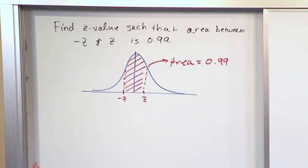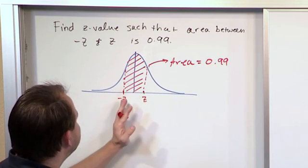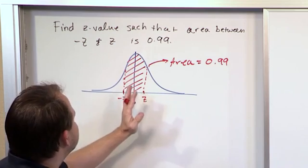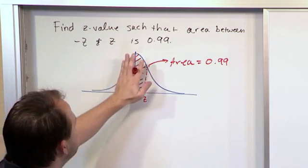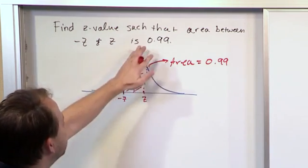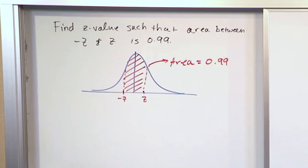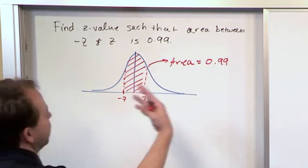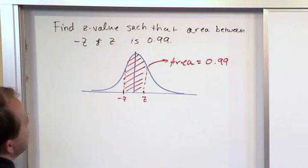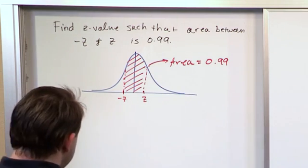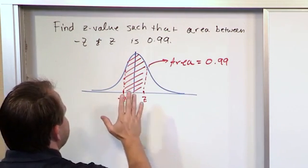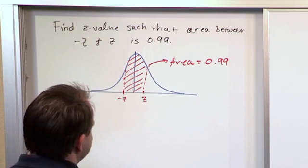So what I need to do is go to my table and somehow figure out what value of z, such that if I look on the positive and the negative side of the mean, give me an included area that's equal to this. Now, certainly, you can't just solve it straight out by putting this number into your chart because the chart is set up to give you areas to the left.